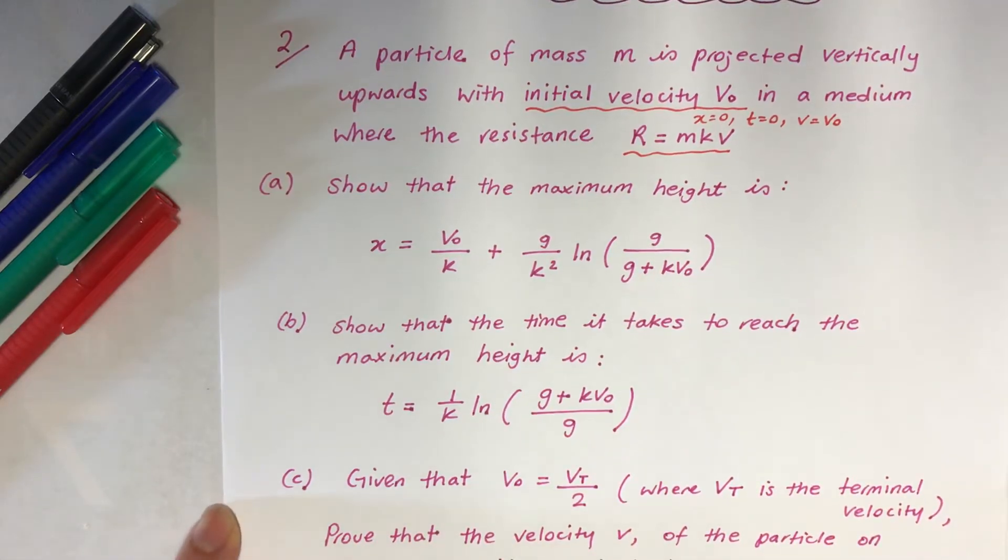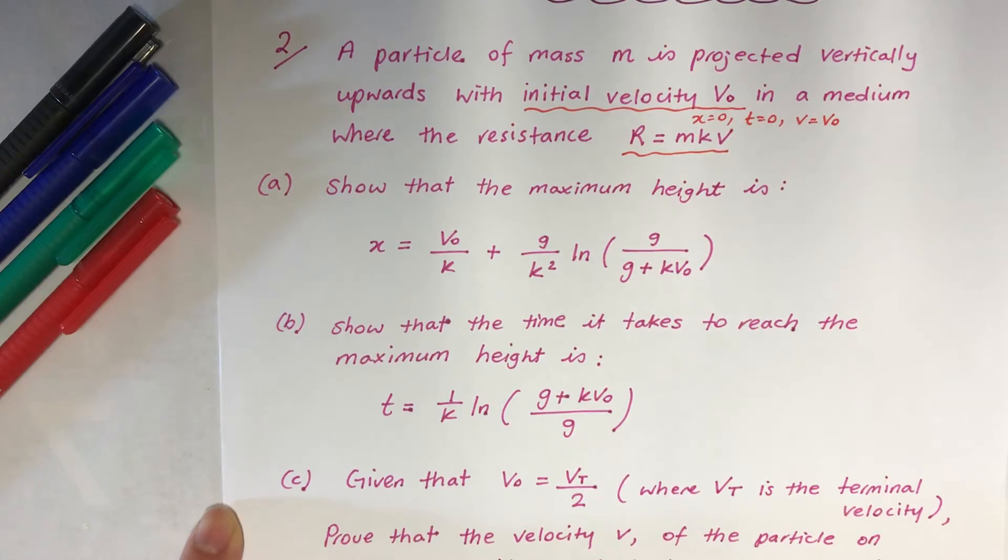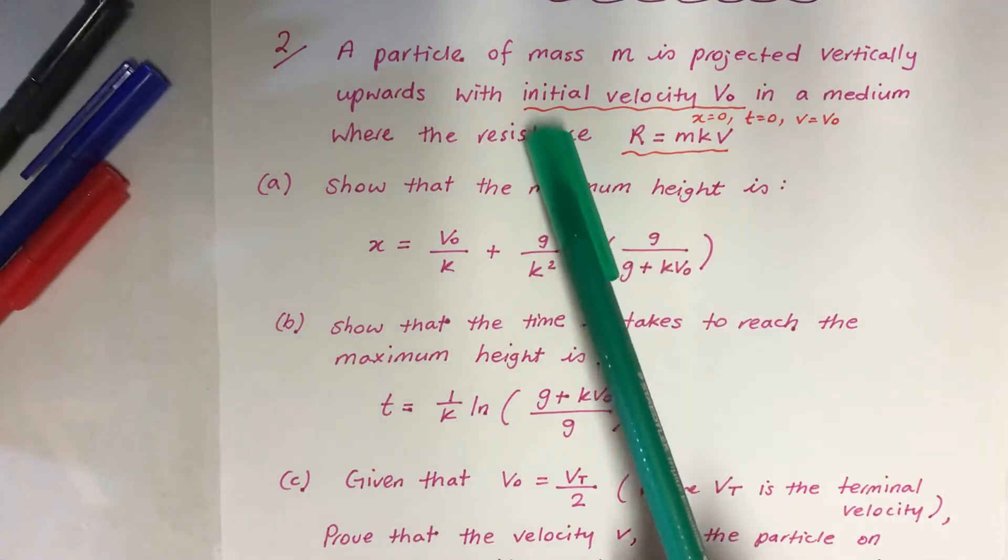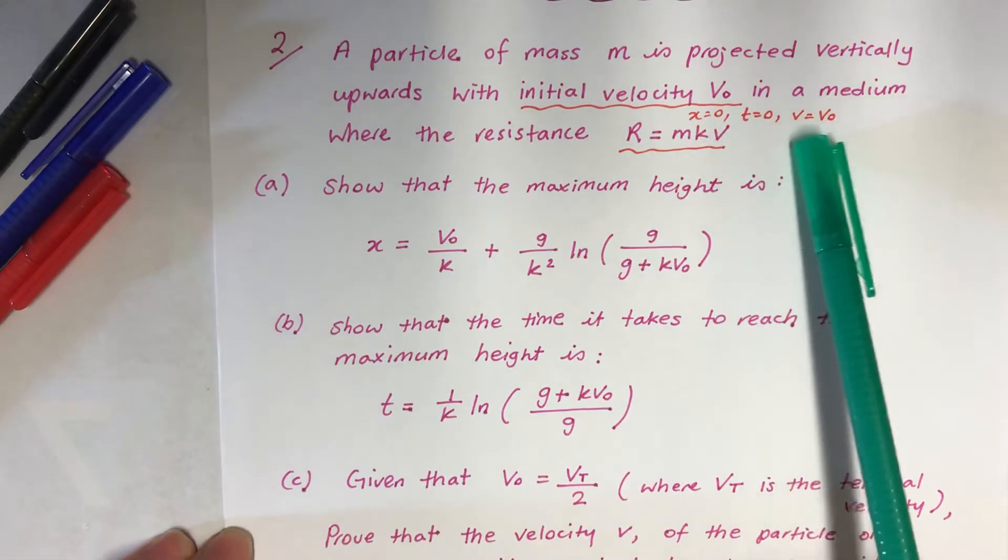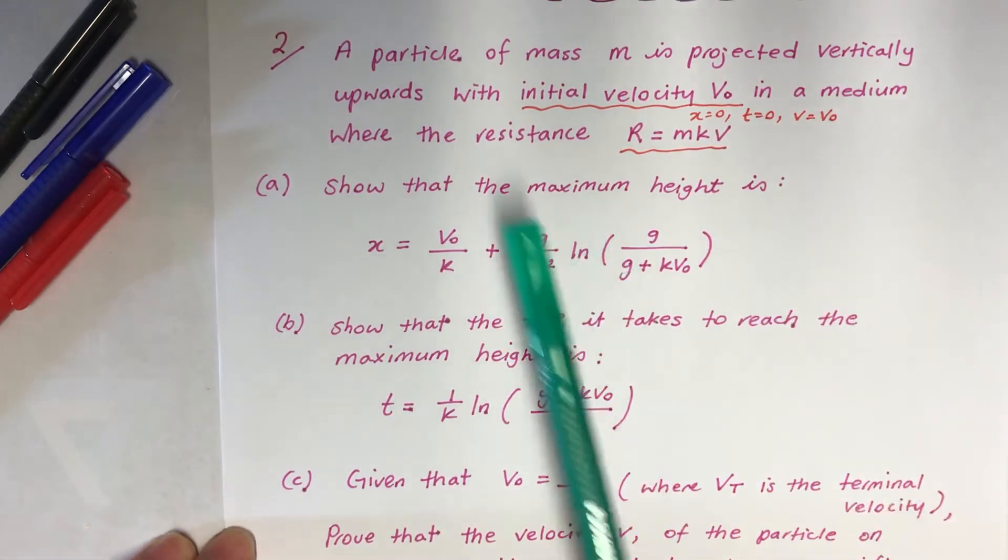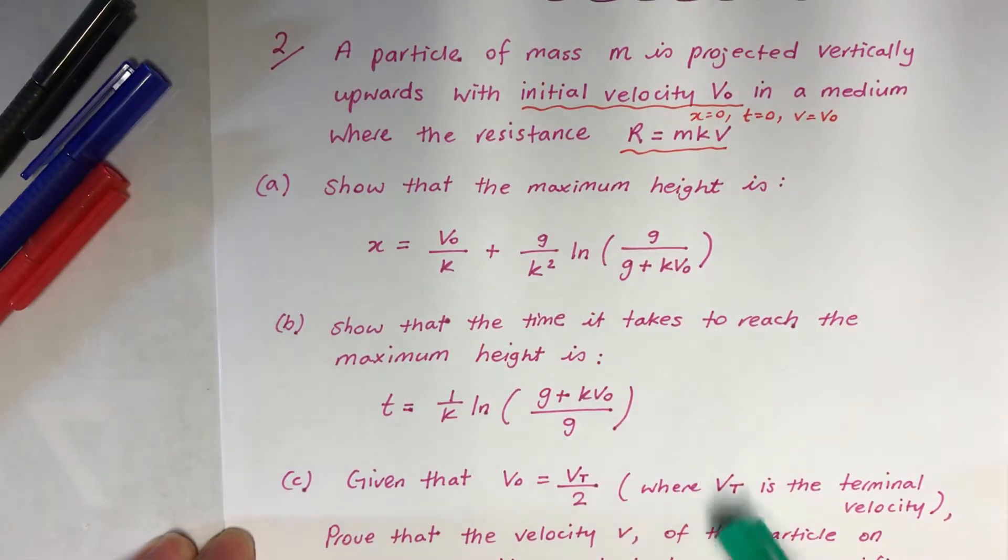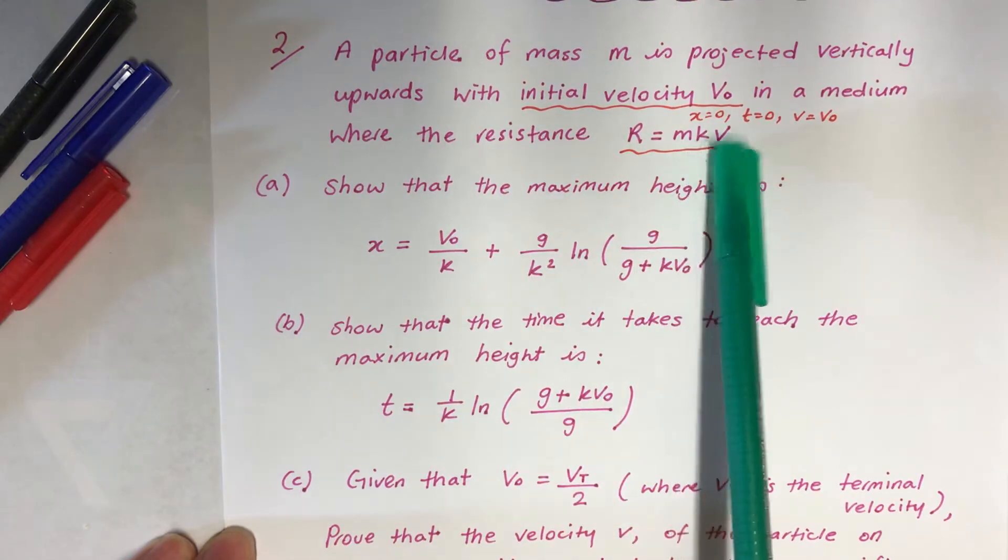Question 2: A particle of mass M is projected vertically upwards with initial velocity V₀ in a medium where the resistance R equals MKV. So let's have a look at this. Initial velocity V₀. When X equals 0, T equals 0, V equals V₀. So it's good to actually write it down before you start proving or solving it, and of course R equals MKV is important.